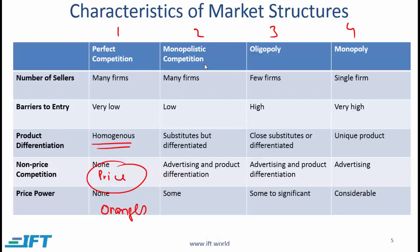Second, monopolistic competition. Here again we have many firms and barriers to entry are low. The products are generally substitutes — somewhat similar but also differentiated. Firms advertise and try to establish certain differences related to their product, so they follow a product differentiation strategy and there is some pricing power. My favorite example of monopolistic competition is the market for toothpaste.